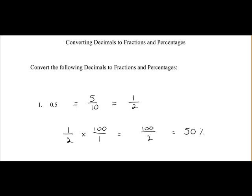So 0.5 is equal to a half or 50%. Next we have 0.62. So 0.62 is 6 tenths and 2 hundredths, or 62 over 100.